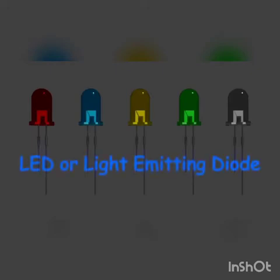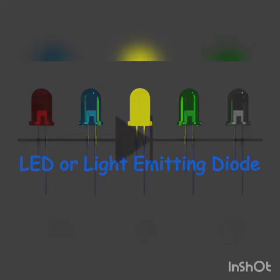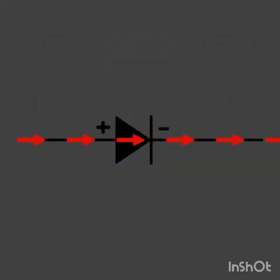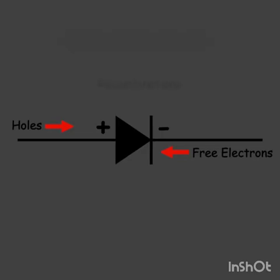Let us discuss about light emitting diode, or LED. A light emitting diode, which we also call LED, is nothing but like a PN junction diode. These diodes emit light when forward biased. When any diode is forward biased, current flows through the diode, caused by the flow of both holes and free electrons.